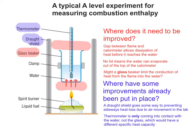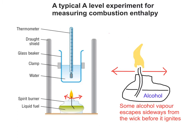So let's now have a look at things that are maybe not quite so easy to control. One of the main things we struggle to control is any alcohol vapour that escapes sideways from the wick before it ignites. The liquid alcohol travels up the wick, and once it reaches the open air it starts to evaporate immediately. Most of it will actually ignite, but there might be a small amount that escapes.